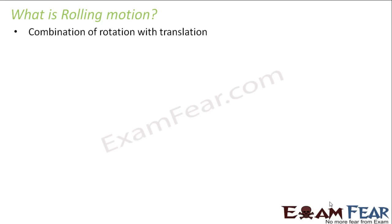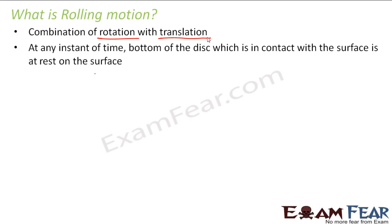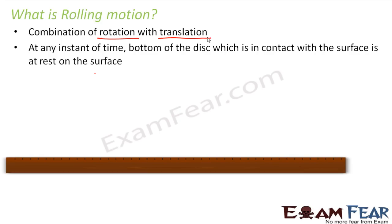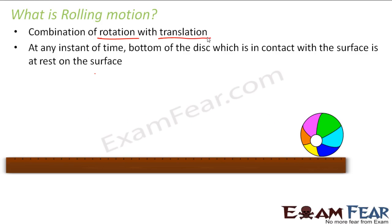Rolling motion is a combination of rotation with translation. When we talk of rolling, it is not only rotation but a combination of rotation with translation. When a disc rolls on the ground, there is rotational motion because the ball is rotating, and at the same time the ball is moving from one point to another — so there is translational motion. So rolling is a combination of rotation and translation.